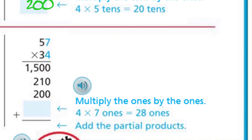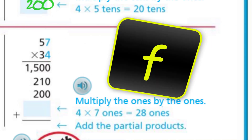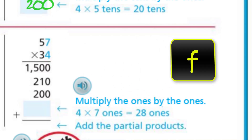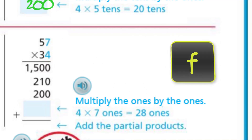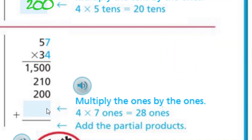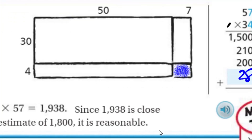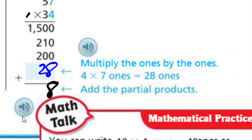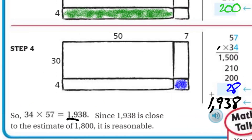Move to step four: we're going to multiply the ones by the ones. Four times seven ones is just 28 ones, and 28 ones is the same as two tens and eight ones, so let's put that down — 28. Then we add the partial products: 8, then 2, then 3, then 2, 4, and 5 — that's 9 — and then 1. And there you go: it's 1,938.